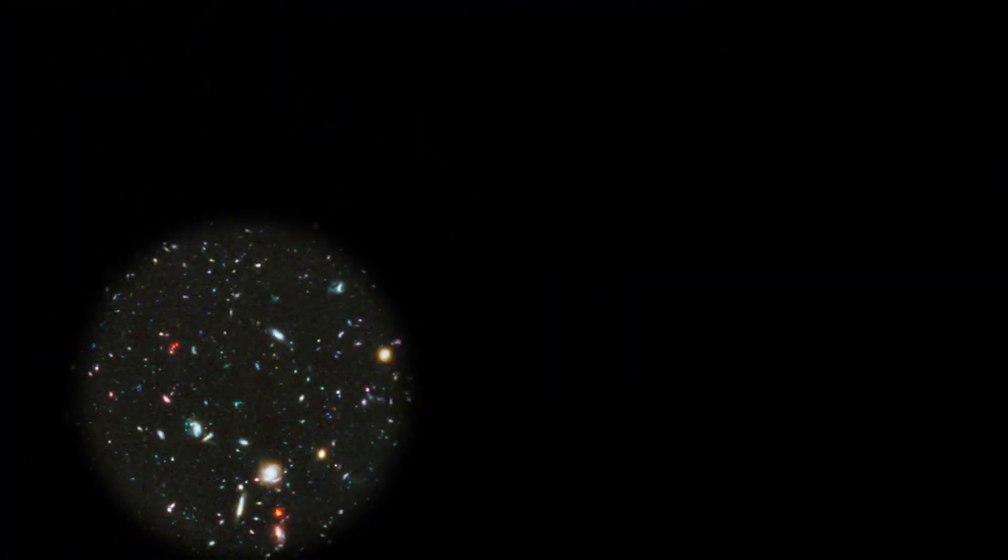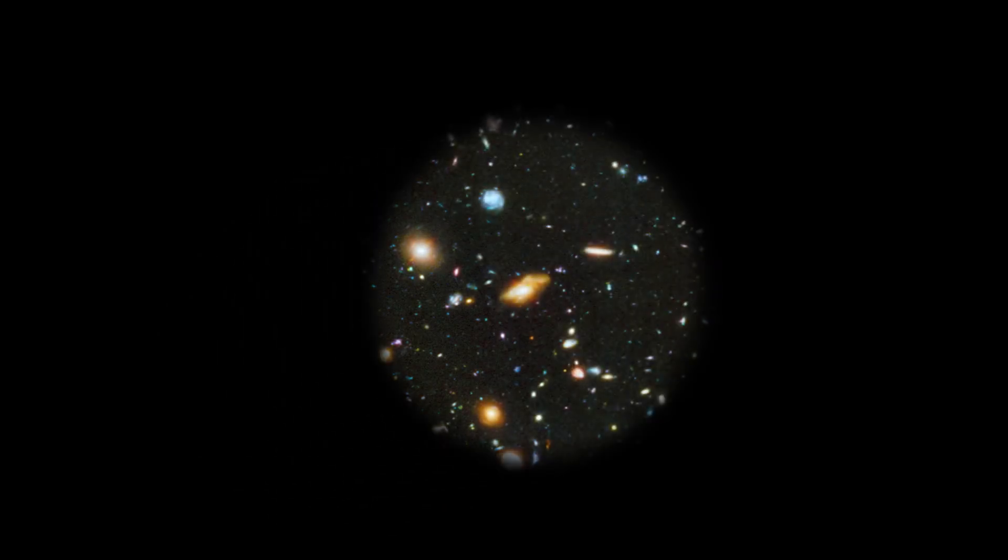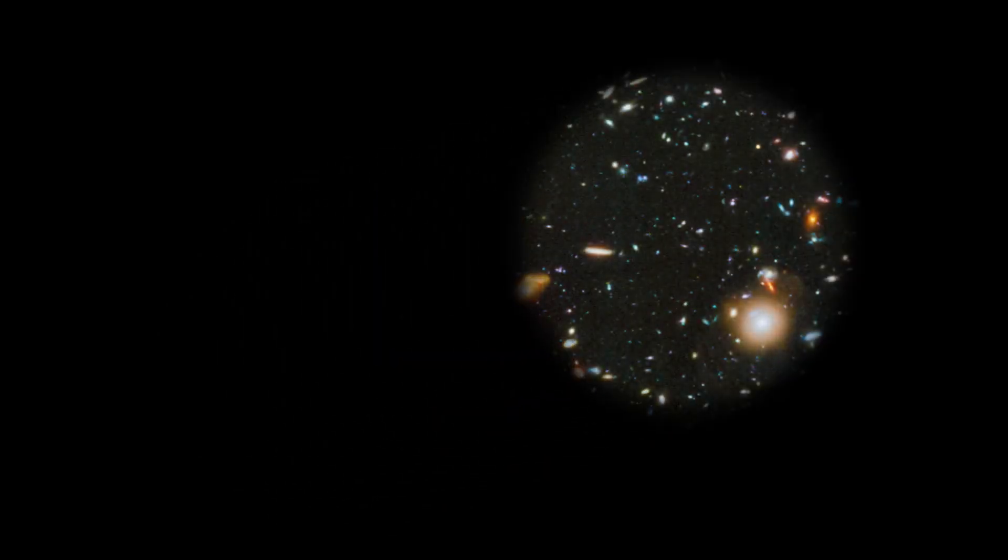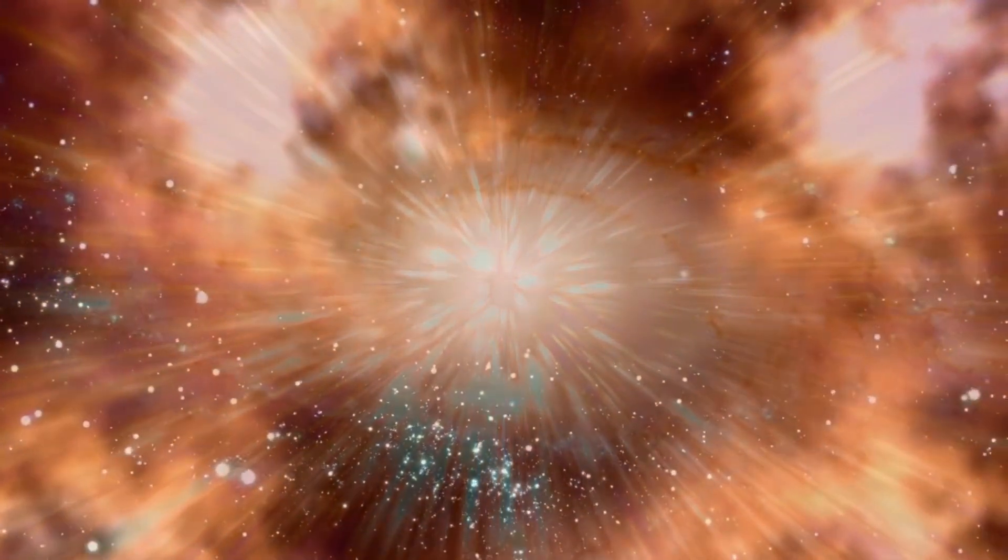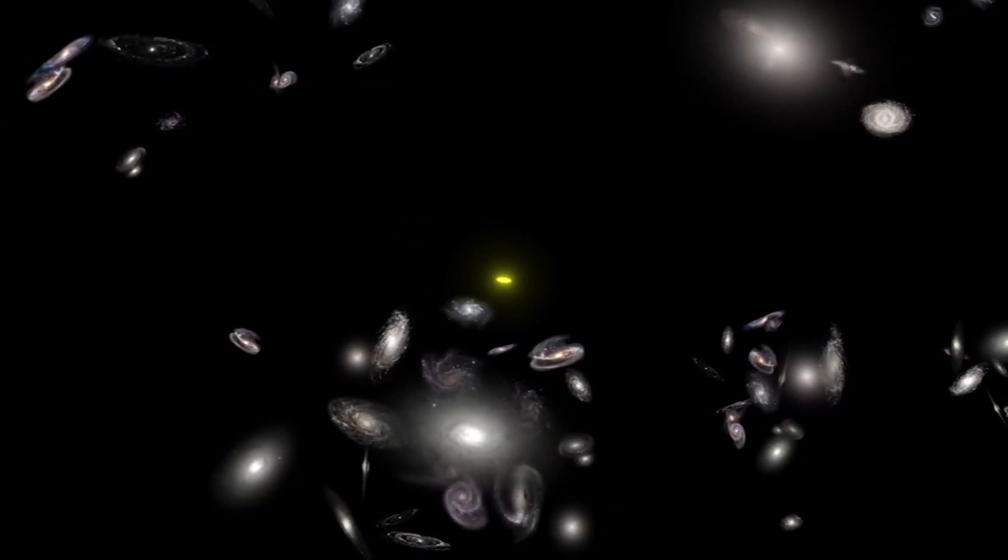The striking images captured by the James Webb Telescope have challenged our understanding of the origins of the universe. Specifically, these images directly contradict the Big Bang Hypothesis, which has long been considered an unquestioned truth by most cosmology theorists. The galaxies captured in these images appear to be too small, smooth, old, and numerous compared to the predictions of the Big Bang Hypothesis.